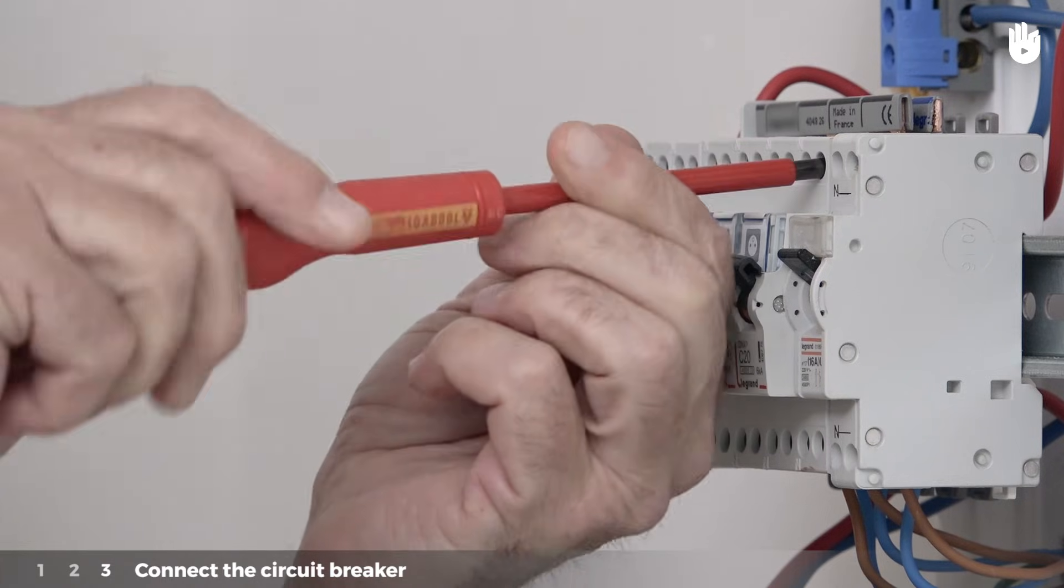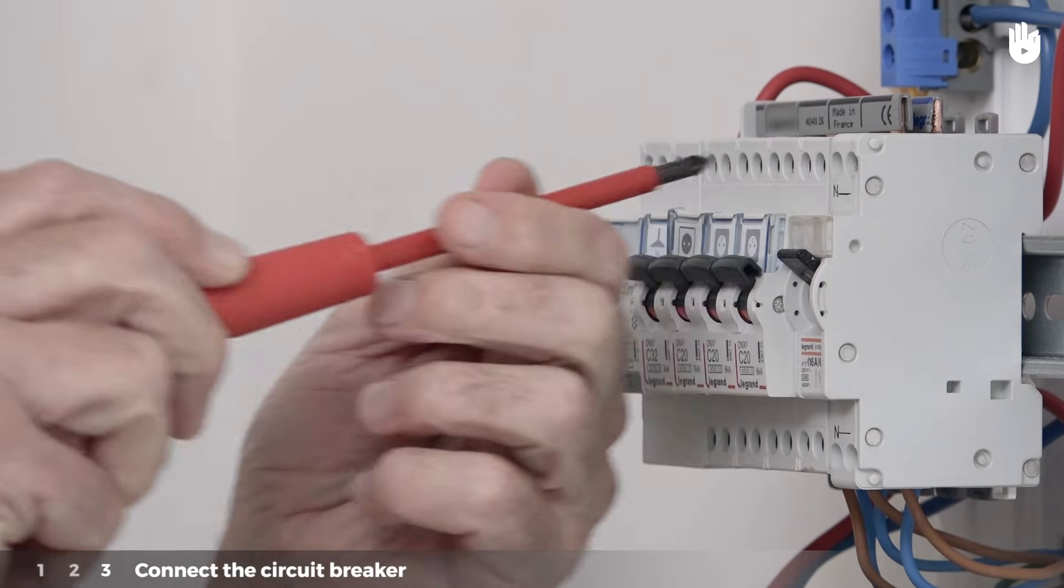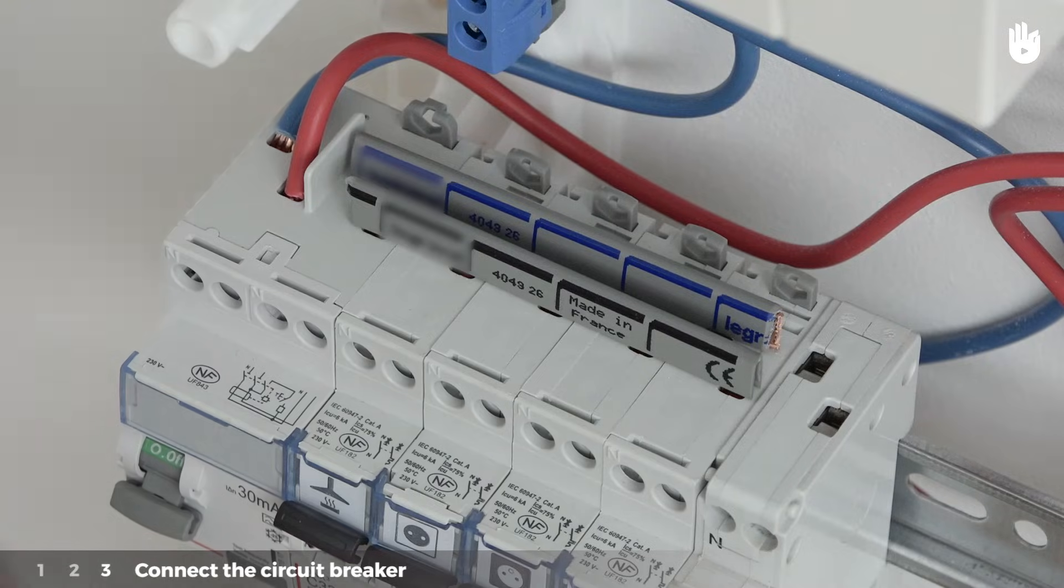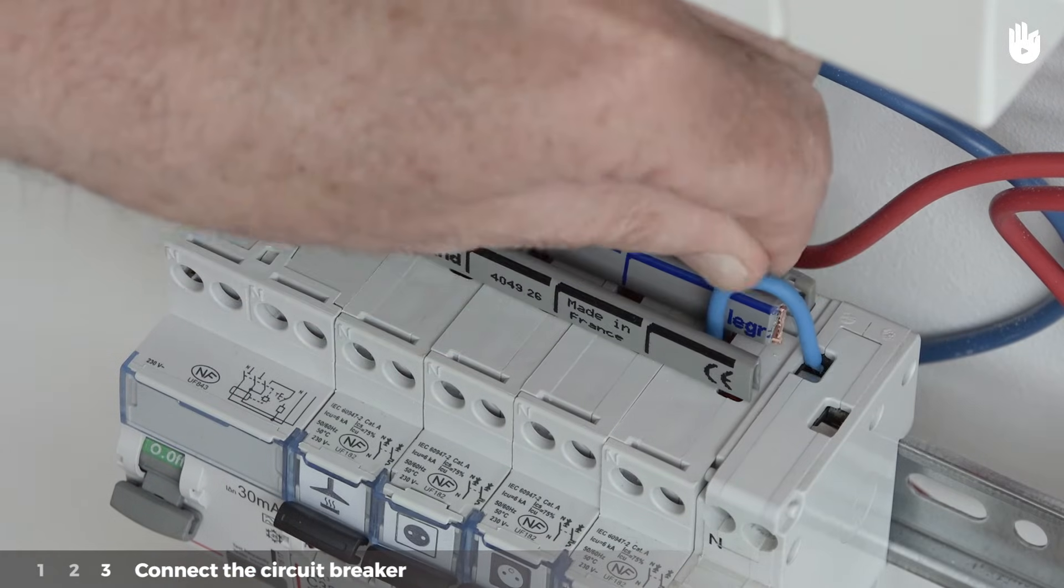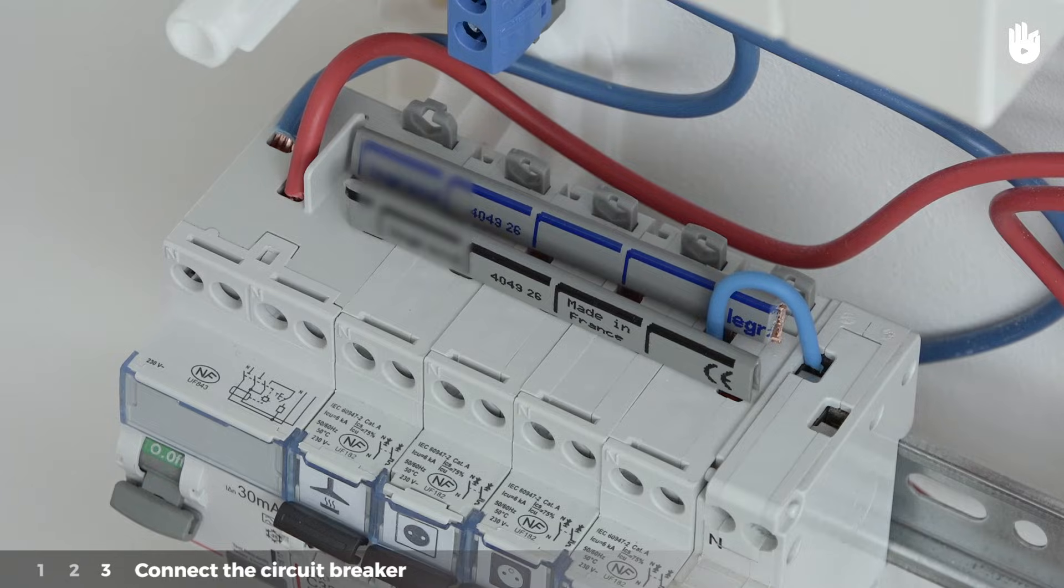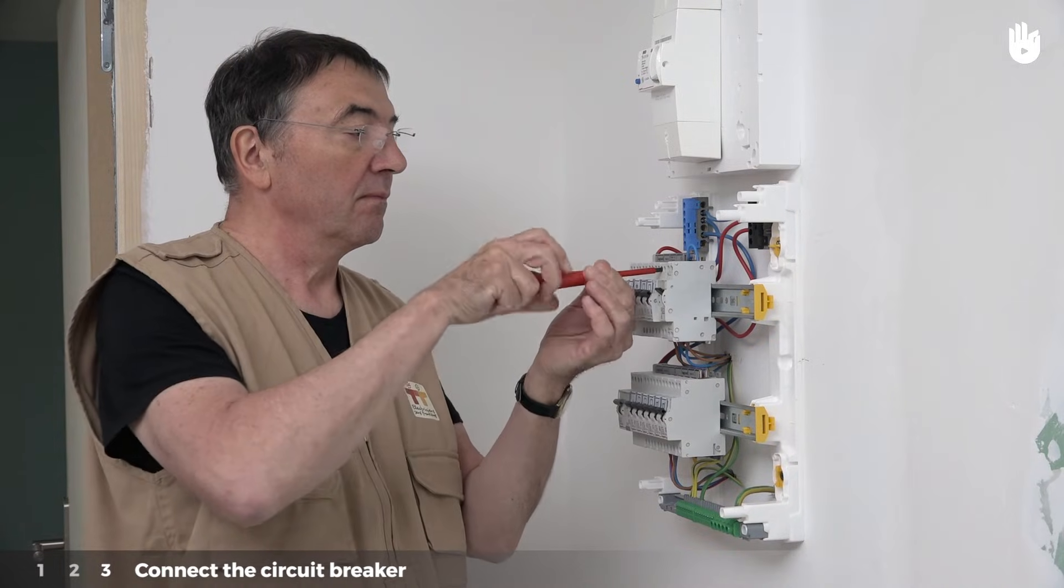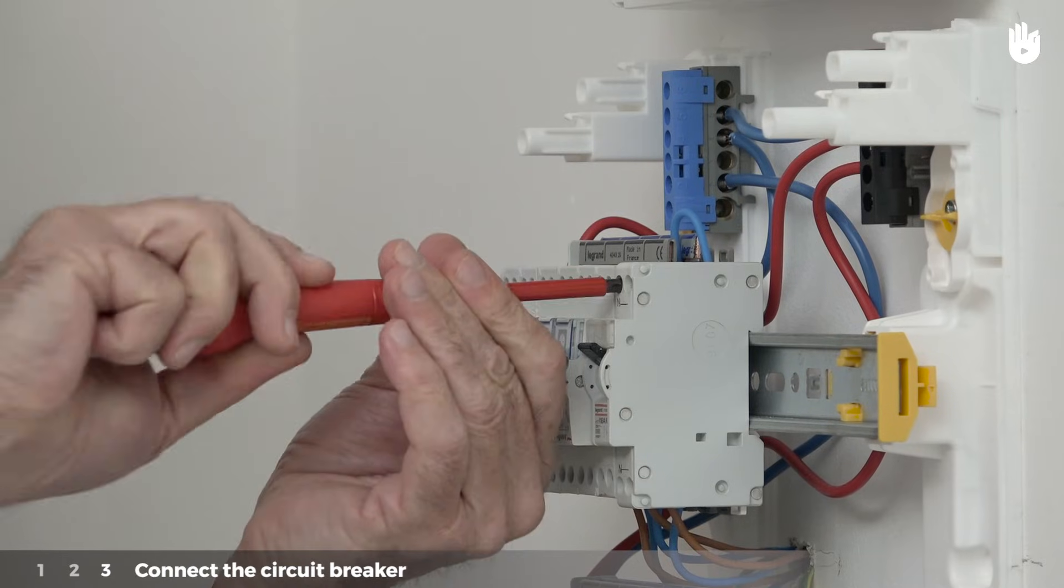Unscrew the two terminals of the neighboring circuit breaker and the new circuit breaker. Put one of the ends of the blue conductor on the neutral terminal of the neighboring circuit breaker and the other end on the neutral terminal of the new circuit breaker. Screw back in the neutral terminal of both circuit breakers.